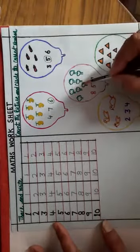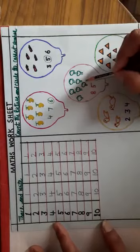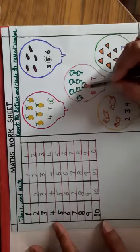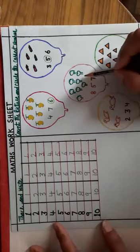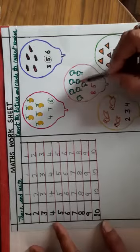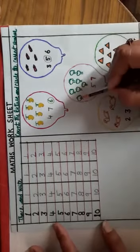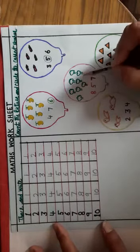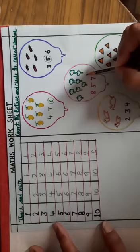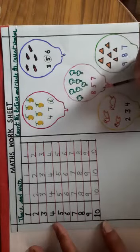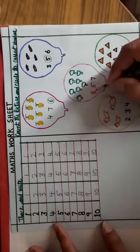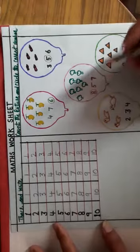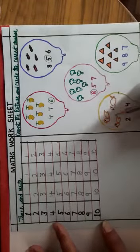Now next is what is this? Now count it. 1, 2, 3, 4, 5, 6, 7, 8.